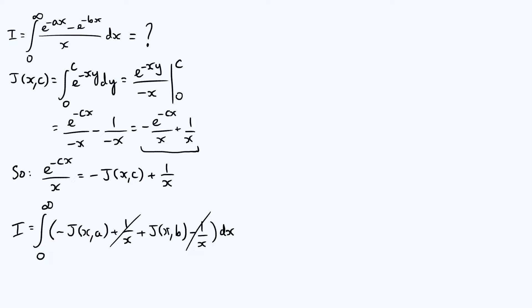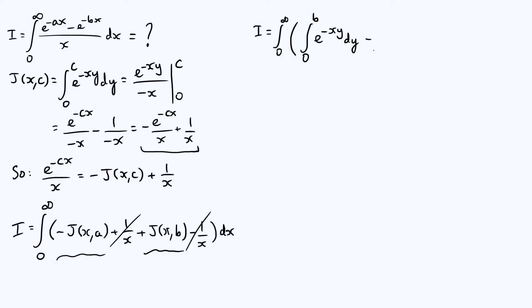We've written the integrand of I in terms of J, so now we substitute the definition of J back in. I becomes the integral from 0 to infinity of: the integral from 0 to b of e^{-xy} dy, minus the integral from 0 to a of e^{-xy} dy, all integrated with respect to x. Now this looks more complicated because it's a double integral, but we'll see that it simplifies quite nicely.